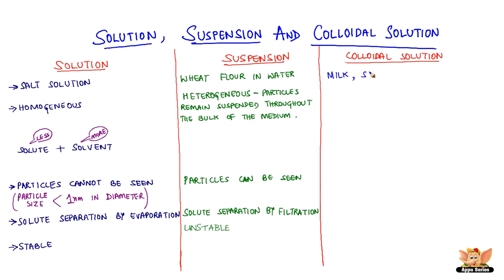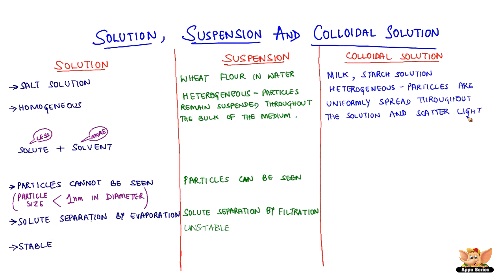Milk is an example of a colloidal solution. Colloidal solution is a heterogeneous mixture in which the particles are uniformly spread throughout the solution and they scatter light. It has two components: dispersed phase and dispersing medium. The solute-like component or the dispersed particles form the dispersed phase, and the component in which the dispersed phase is suspended is known as the dispersion medium. In milk, water is the dispersing medium and the fat and proteins in it form the dispersed phase.